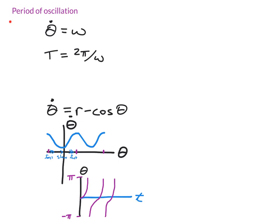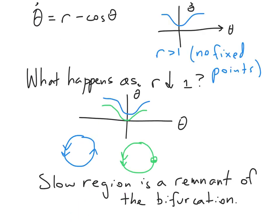Thinking about the period of oscillation, I specifically want to ask the question, how does the period change as we get close to the bifurcation? Since we know that once we're at the bifurcation, there's not going to be any oscillation. So the question is what happens to the period of oscillation as r goes down towards one, since one is where the oscillation turns off.